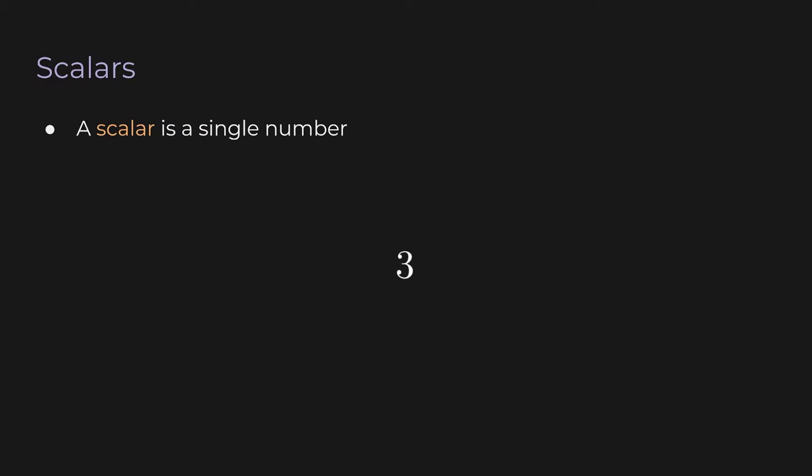The first term I want to talk about is scalar. A scalar is just a single number. It could be anything — just the number 3, it could be an irrational number like pi, it could be a variable, which we could call, for example, alpha or x.